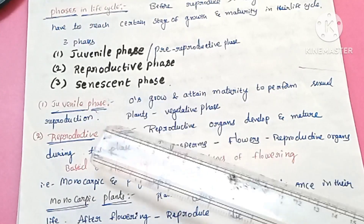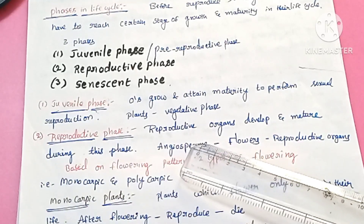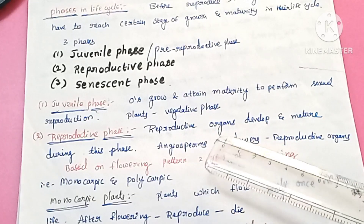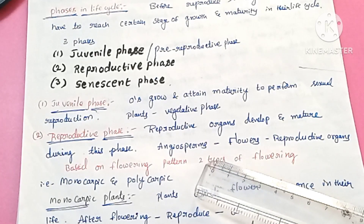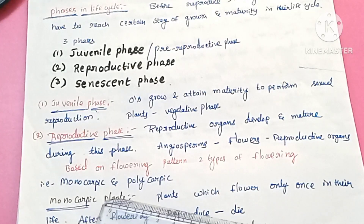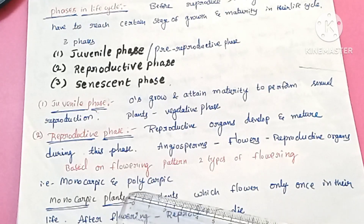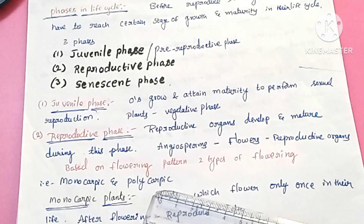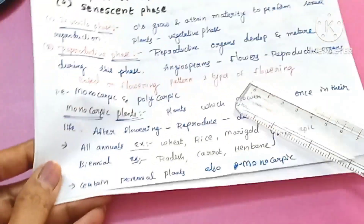The next phase is the reproductive phase, in which the organism gets mature and the plant develops flowers. There are many flowering plants; these include monocarpic plants and polycarpic plants.